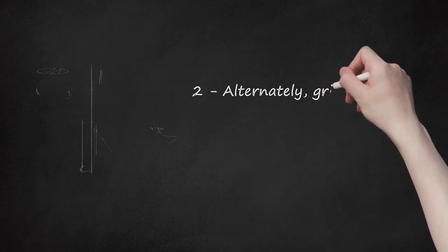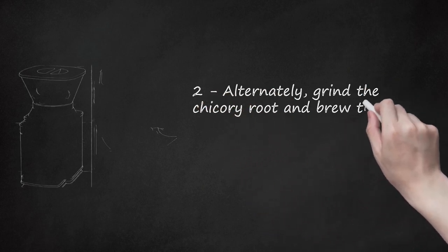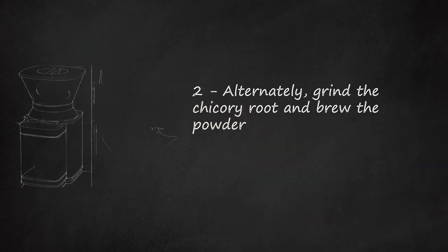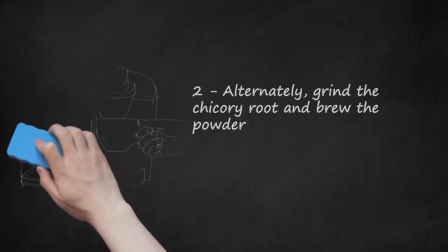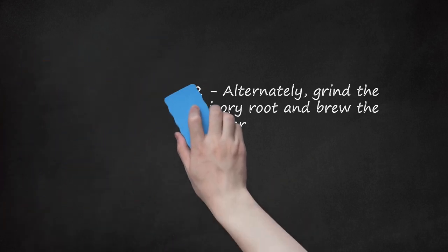Alternately, grind the chicory root and brew the powder. Brew chicory coffee however you usually brew coffee. Use a French press, a coffee machine, a pour-over, or any other method of your choosing. You may also boil and simmer the powder as you would with the minced root.